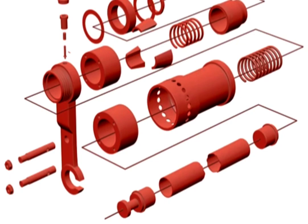A full set of production drawings may contain detail, assembly, subassembly, working assembly, and diagram drawings that are all used to depict the final product.